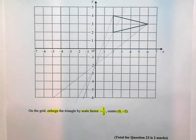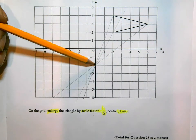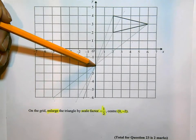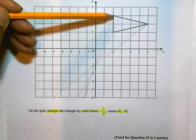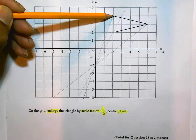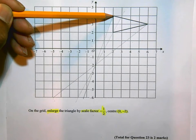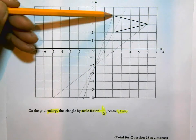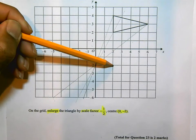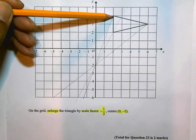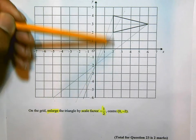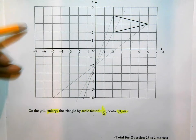So if I think about this, from the center of enlargement to this corner, I'm going to do this to each corner. To get from the center of enlargement to this corner, I need to go 2 across and 2, 4, 6. So 2 across and 6.